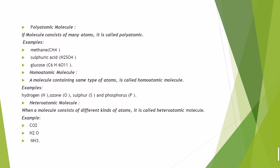A homoatomic molecule contains atoms of the same type, such as hydrogen gas (H₂), ozone (O₃), sulfur (S), and phosphorus (P₄). A heteroatomic molecule consists of different kinds of atoms — examples are carbon dioxide, water, and ammonia gas.